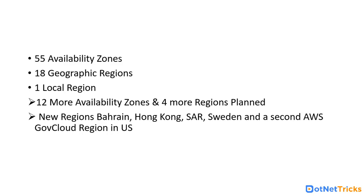In the Middle East, a new region is about to launch in Bahrain, as well as in Hong Kong SAR, Sweden, and another second GovCloud region in the US. In the US, one GovCloud region already exists. This is for government agencies that implement high levels of regulatory and compliance requirements, where data is under heavy scrutiny — for example, tax-related data of US citizens. They store such data on the GovCloud, which is also hosted on AWS. This demonstrates the kind of reliability that the US government has in AWS infrastructure.